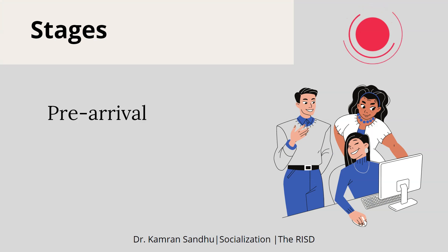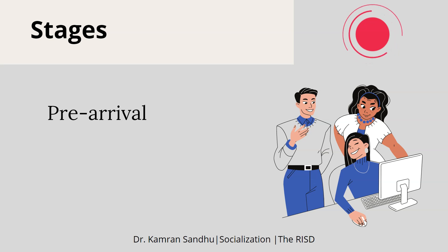Stages in the socialization process — there are three stages. Number one is the pre-arrival stage. This stage recognizes that each individual arrives with a set of organizational values, attitudes, and expectations. The success depends upon the degree to which aspiring members have accurately anticipated and forecasted the expectations and desires of those in an organization in charge of selection.